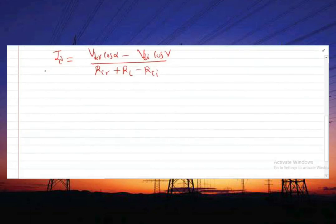The power at the rectifier and the inverter is calculated. We can also write PDI = VDI * ID minus ID squared RCI. This was presented in the previous lecture.